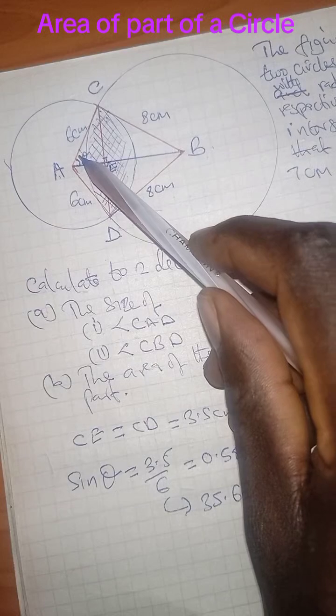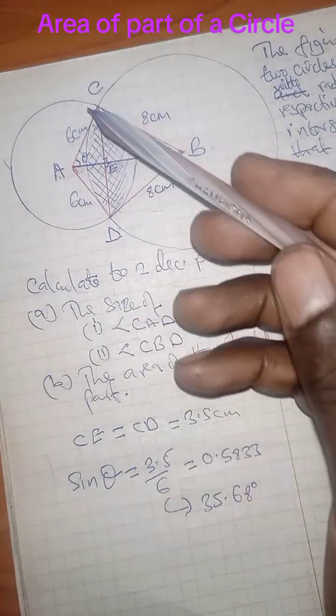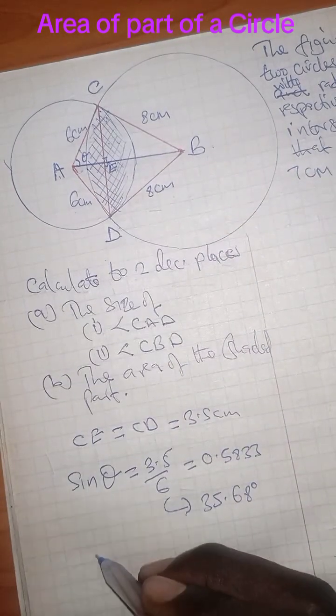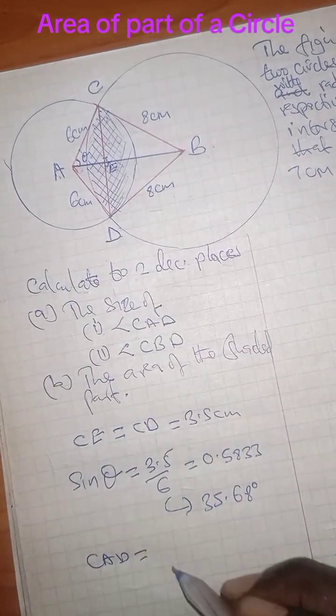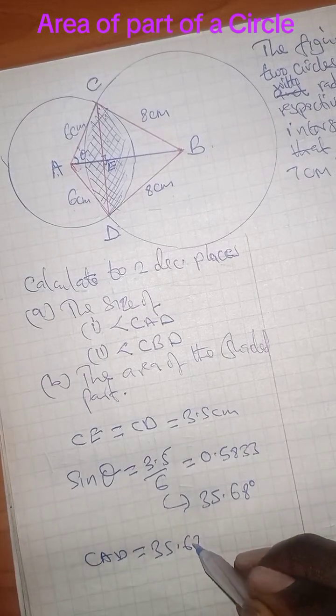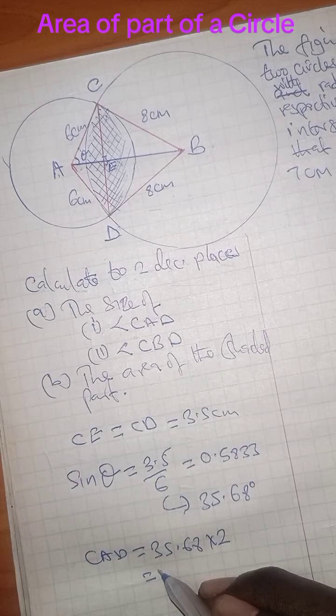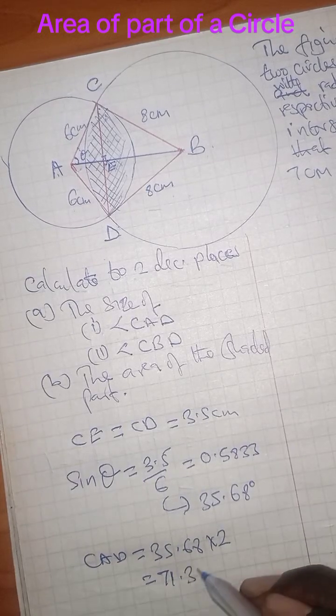Now, these are bisects. It means this angle is equal to this one. And we have been told to find CAD. So CAD is just taking 35.68 multiply by 2, giving us 71.36.